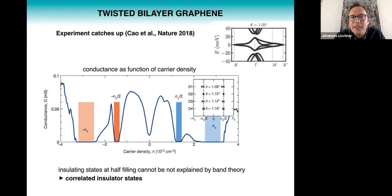It took experiment until 2018 to catch up because it's just very difficult to create these precisely aligned bilayers. But they finally did that and were able to measure the conductance of magic angle twisted bilayer graphene as a function of the carrier density in the material. Here is the graph from their Nature paper and the most important thing is that there are several regions where the conductance vanishes. There's two regions at plus or minus ns which is basically when you have completely filled or completely emptied these flat bands, and in that case the material is just a band insulator.